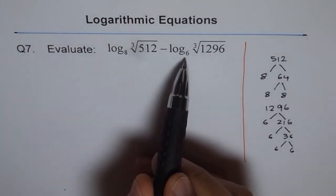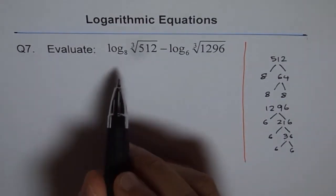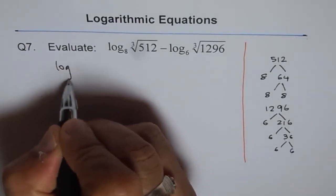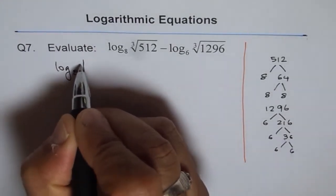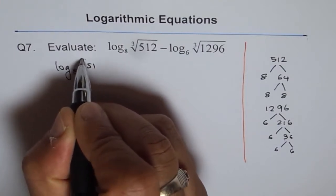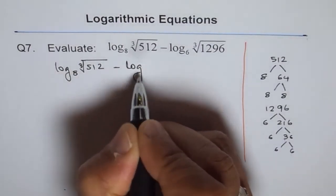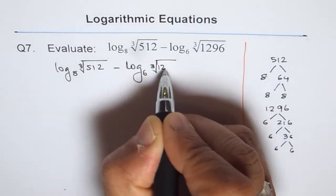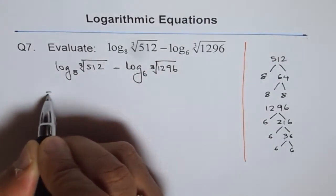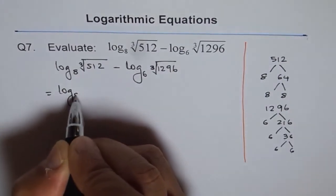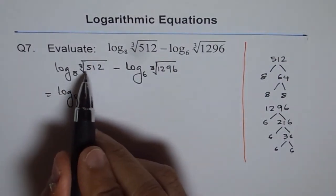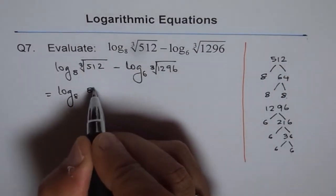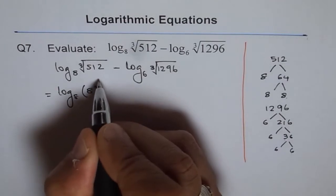Now I can write this equation as log base 8 of cube root of 512 minus log base 6 of cube root of 1296. Since 512 is 8³, I have log base 8 of 8 to the power of 3 to the power of 1/3.